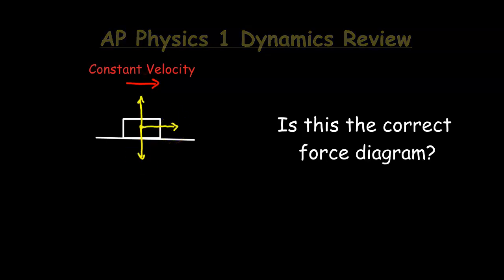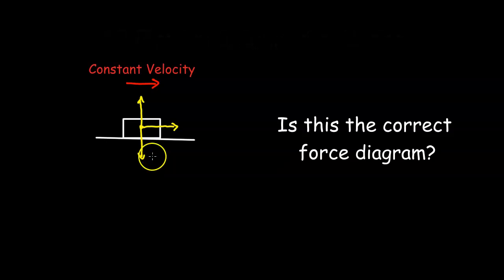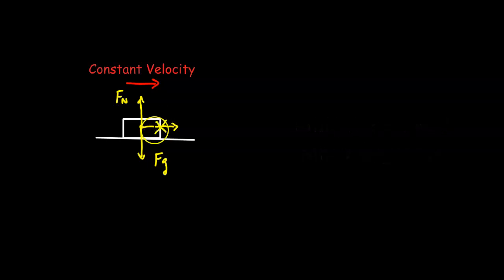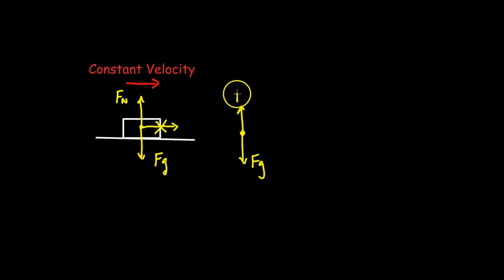The first force we have here is the gravitational force, which is going to be down. On Earth, anything that has mass has a gravitational force acting on it in the down direction. And then because it's on a table, the table is pushing it up — it's got a normal force in the upward direction. If you spotted the extra forward force, you're correct. There is no forward force. So this only has a gravitational force and a normal force.